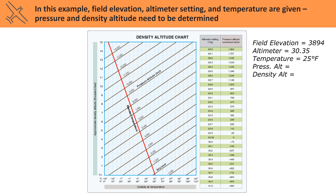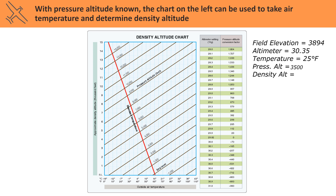Let's try a full example like we'd see on the test. They give us field elevation, temperature, and altimeter setting, and we have to find pressure and density altitude. First, find the conversion factor for the altimeter. There's no line for our altimeter setting of 30.35, so we interpolate between 30.30 and 30.40, averaging their conversion factors to get negative 394. Applying that to the field elevation — subtracting 394 from 3,894 — gives a pressure altitude of 3,500. Next, to find density altitude, we use the chart on the left: find 20 degrees Fahrenheit at the bottom, move up to the pressure altitude of 3,500 feet, which is halfway between the 3,000 and 4,000 lines, then read left to get a density altitude of 2,000 feet.